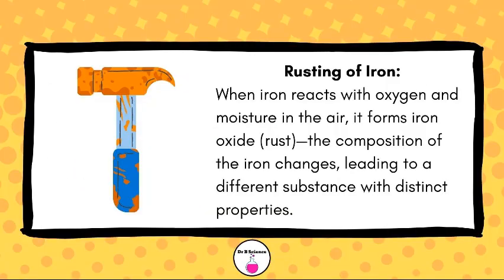Rusting of Iron: When iron reacts with oxygen and moisture in the air, it forms iron oxide — rust. The composition of the iron changes, leading to a different substance with distinct properties.